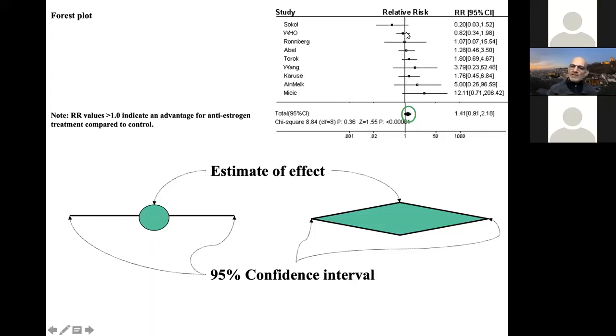So what happens in a meta-analysis is that all these individual points, including those below one, including those very close to one, including those much greater than one, are all put together into a single summary point, which in this case happens to be 1.4, a little bit above one. And then all the confidence intervals are combined together to produce a summary confidence interval. And you can see that this length of the diamond from one end to the other, from one side to the other side, is much shorter than the length of any of the individual studies.